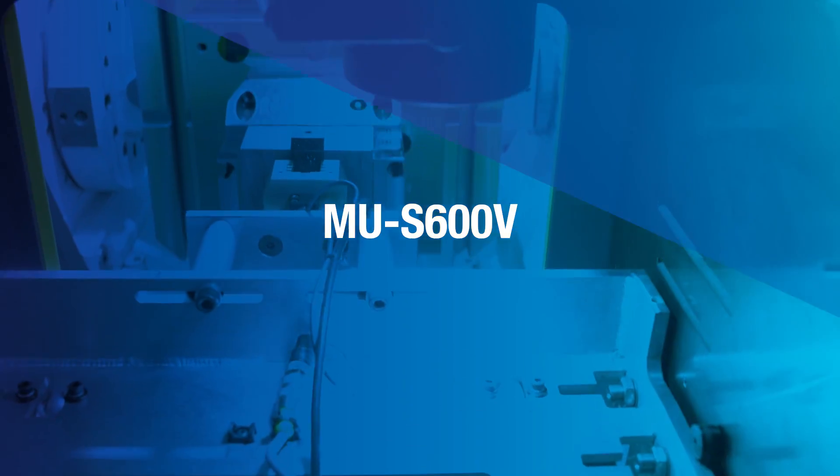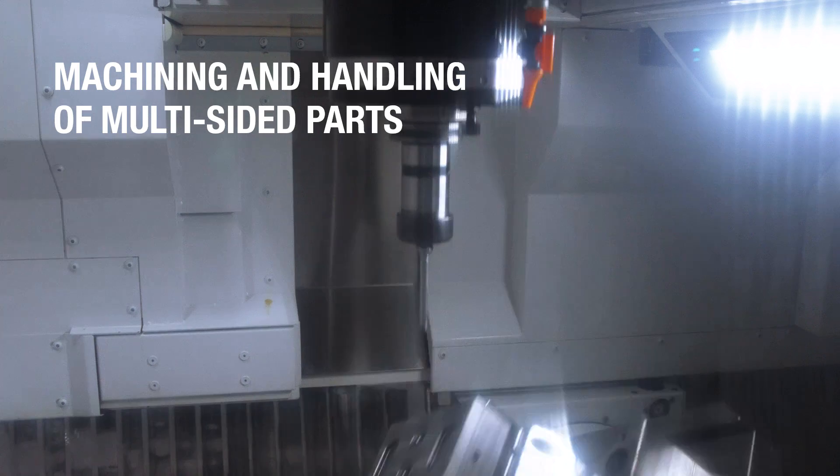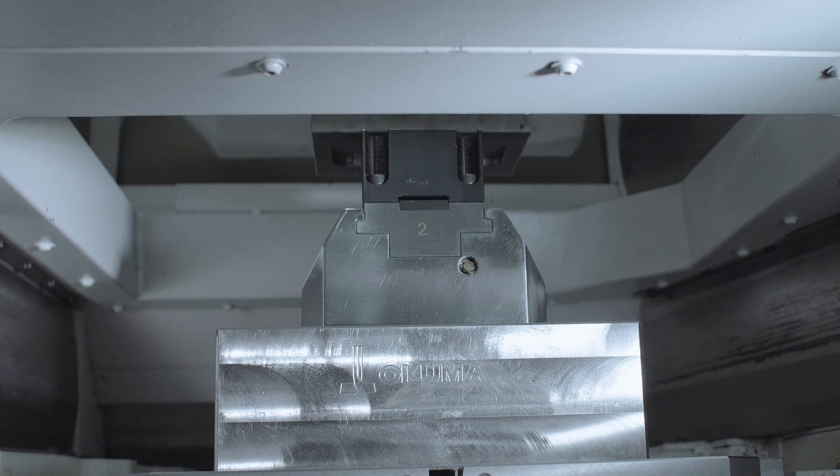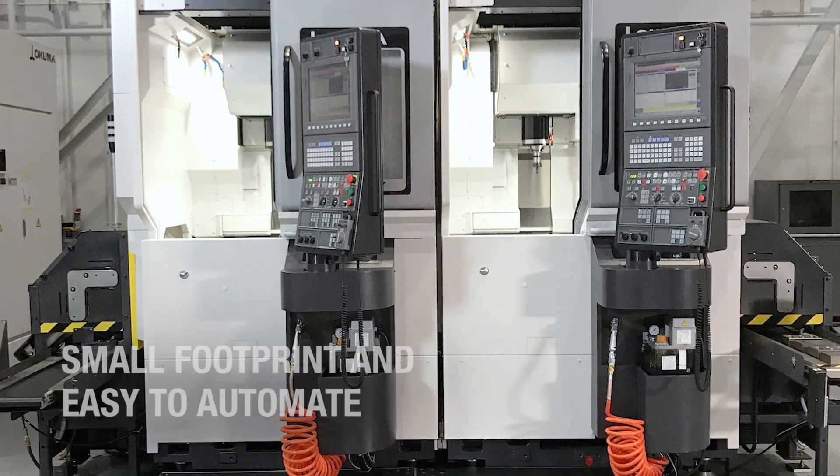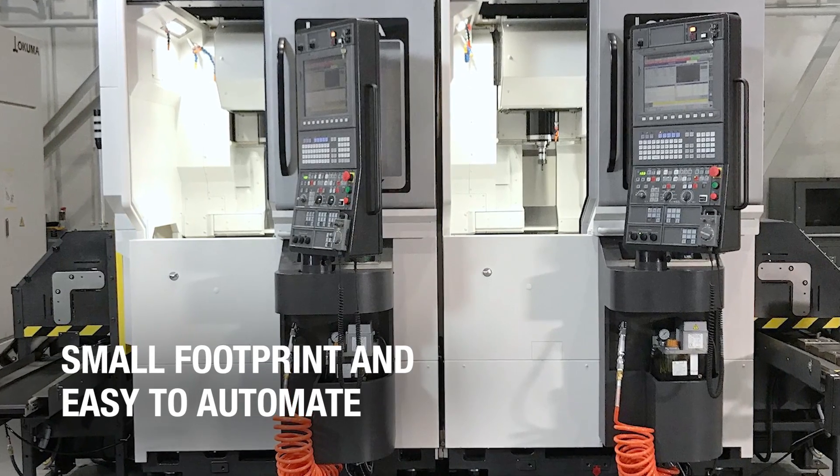For example, are you able to machine all six sides without touching the part? Our MU-S600V has an innovative work handoff system and offers additional time-saving options like an external conveyor belt.